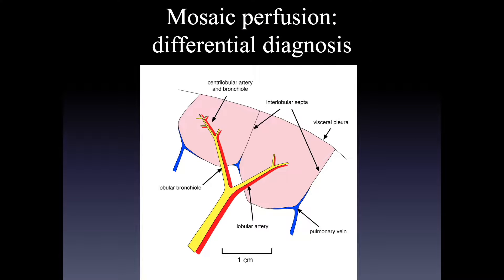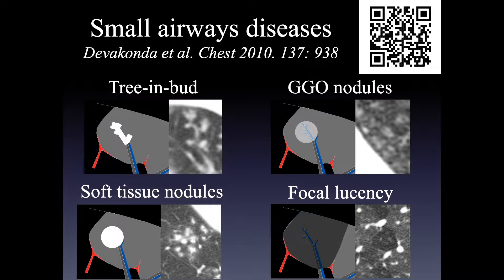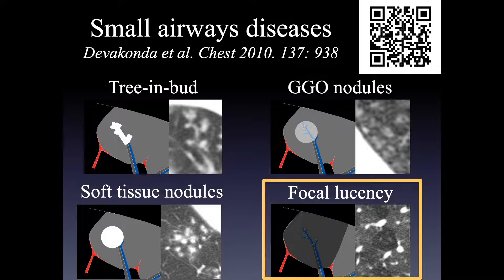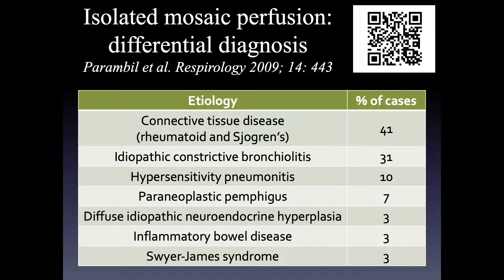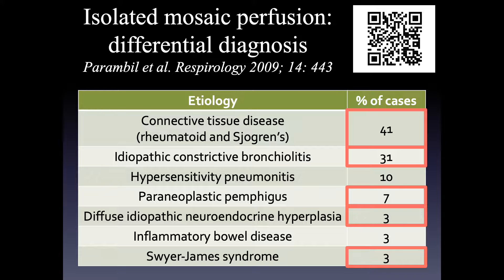Airways diseases in general affect structures at the middle of the pulmonary lobule. There are classification schemes for small airways disease, many of which include nodules. The category most pertinent to our differential diagnosis of mosaic perfusion is airways diseases that produce focal lung lucency. Looking at a paper on the most common causes of isolated mosaic perfusion, constrictive bronchiolitis — highlighted in red — accounts for a significant percentage of patients with isolated mosaic perfusion.